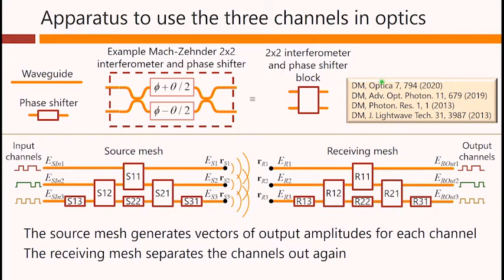The basic idea is that we take Mach-Zehnders, like this one shown here as a waveguide Mach-Zehnder, or as a block here, and we construct meshes of interferometers, like this source mesh here and this receiving mesh over there.